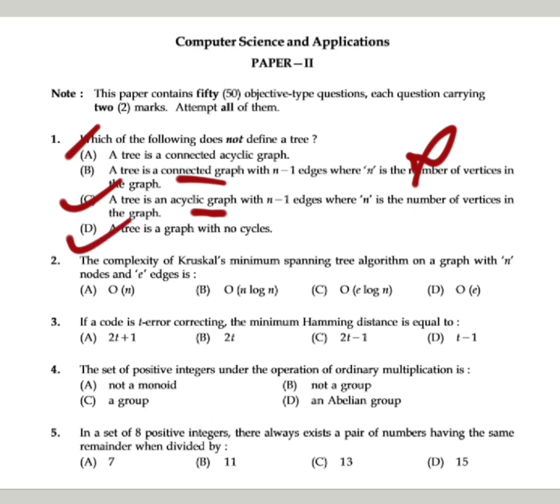And a tree is a graph with no cycles. Options A, C, and D are correct, and option B - this question is correct.